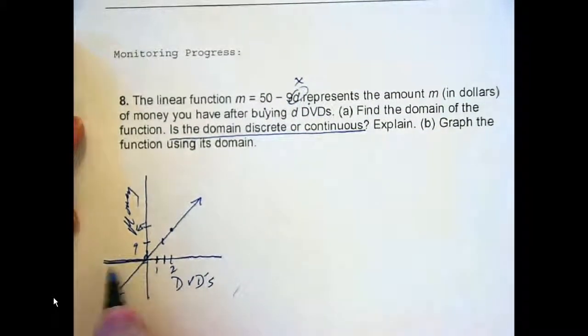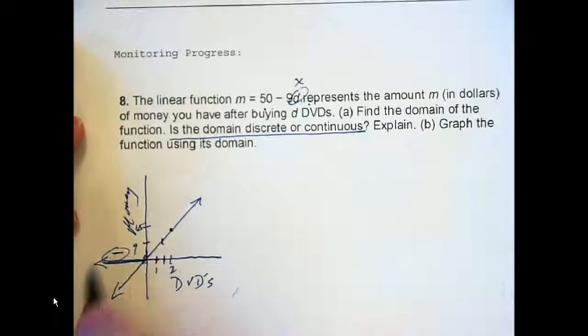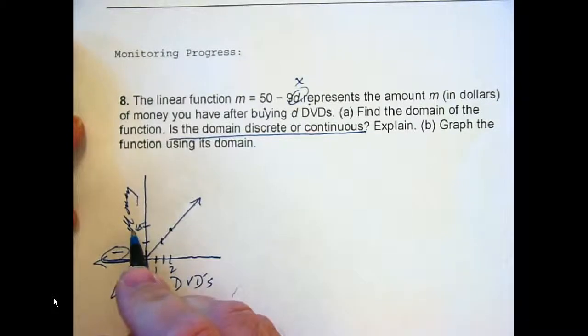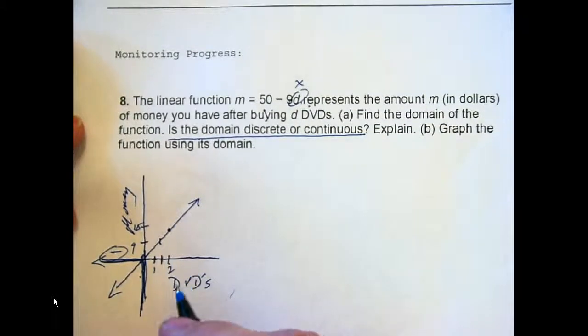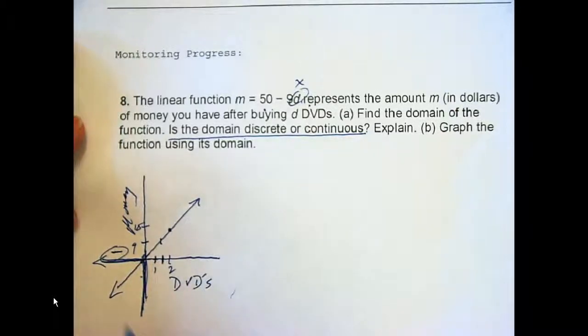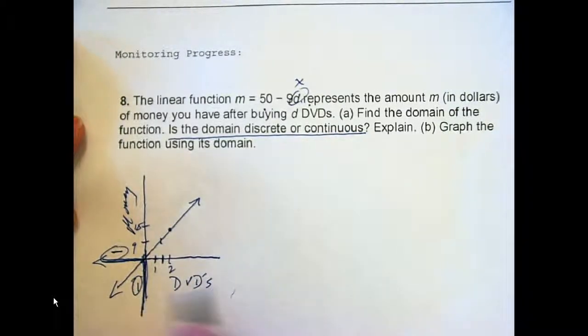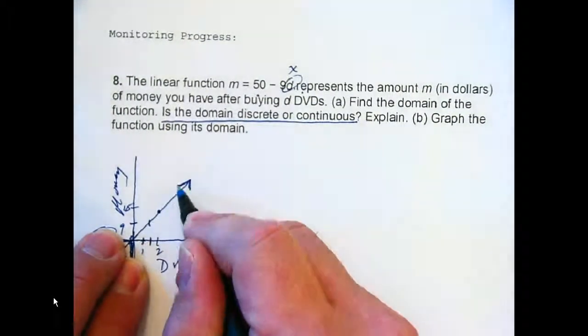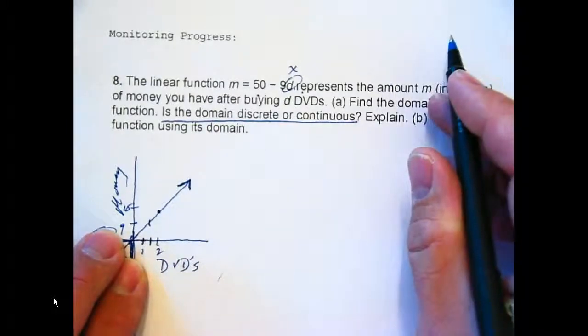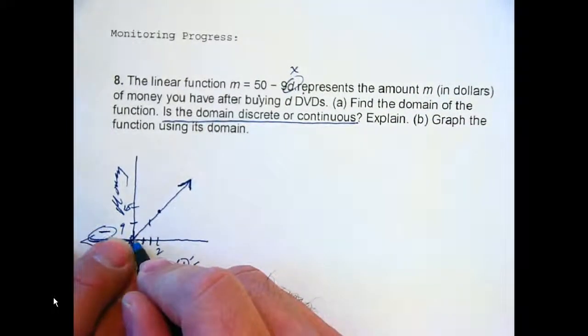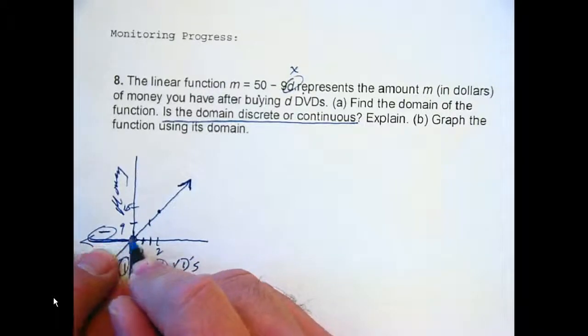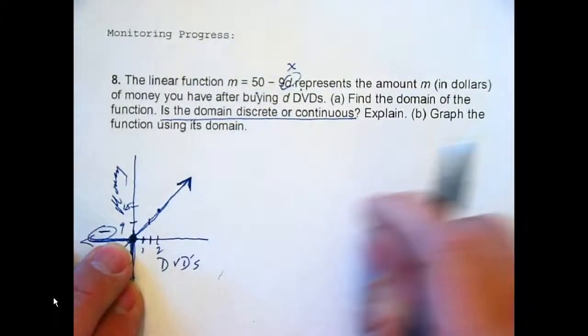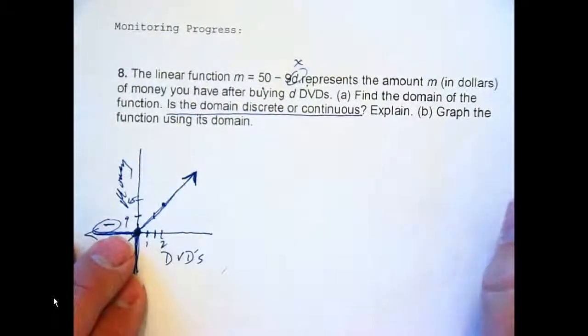In fact, let's talk about other things you can't have. What are over here? Negatives. Can you have negative DVDs? No. Can you have, what's over here? Negative money. Some of us have negative money. That's called debt. But, in this problem, we can't have negative money. So, really, our graph is just confined to here. So, it can go on forever in terms of cost. Just keep buying DVDs.